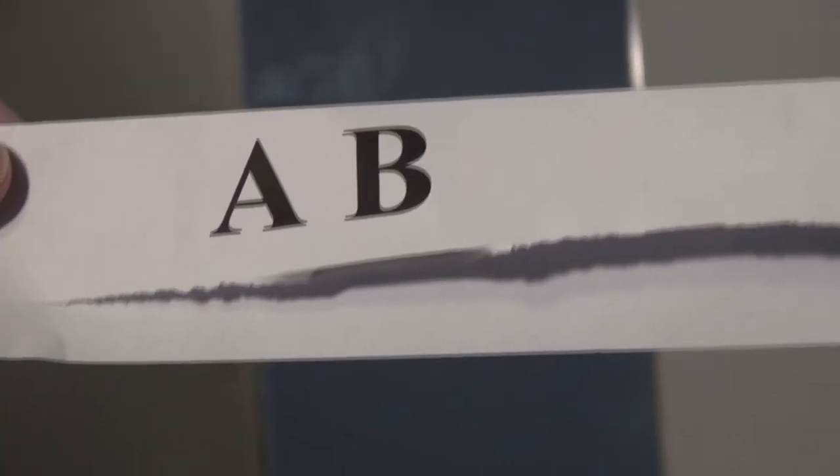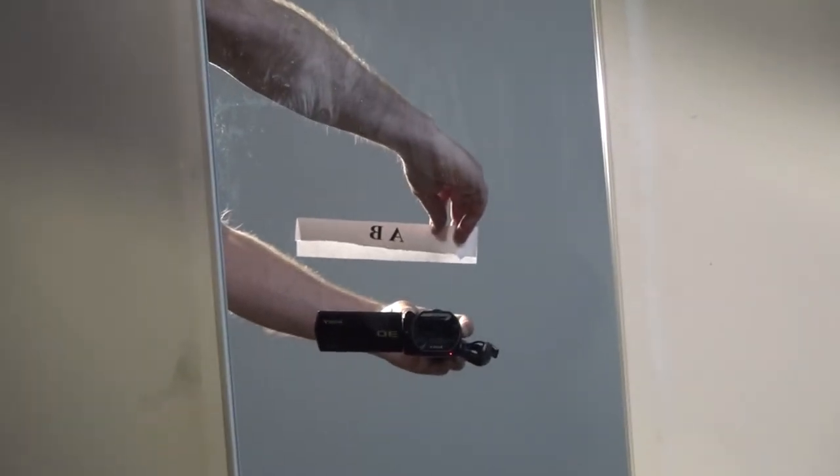If I point the camera at the letters AB, the mirror shows what the AB would look like if viewed from the opposite direction.